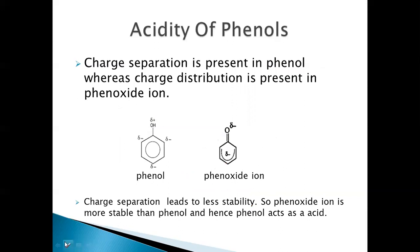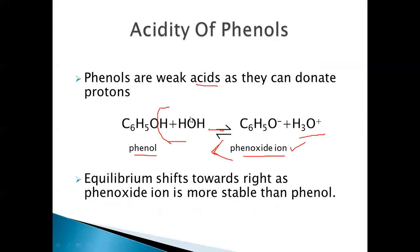Looking at the resonance hybrids of both structures, there is charge separation in phenol and charge delocalization in the phenoxide ion. Because of this, the phenoxide ion is more stable, and the equilibrium shifts to the right side, resulting in proton donation. Since phenol donates a proton, it acts as an acid — phenols are weak acids.